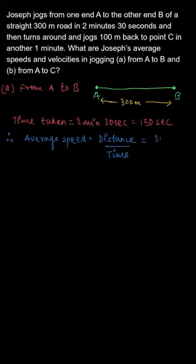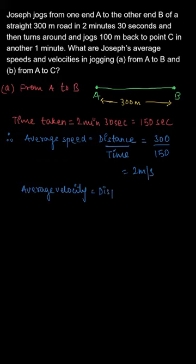So your average speed would be total distance travelled upon total time taken, that is 300 by 150, that will give you 2m per second.